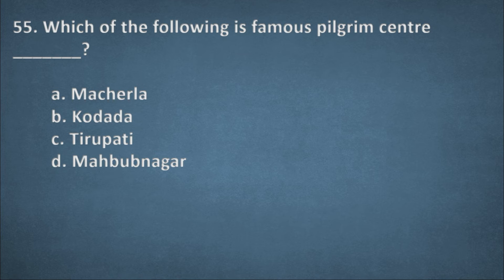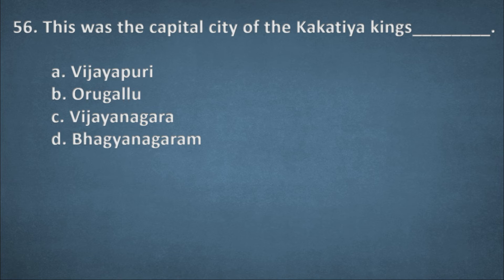Next one. Which of the following is famous pilgrim center? Options: Macherla, Kodada, Tirupati, Mahbubnagar. The right option, C, Tirupati. Next one. This was the capital city of the Kakatiya king. Options: Vijayapuri, Orugallu, Vijayanagara, Bhagyanagar. The right option, B, Orugallu.